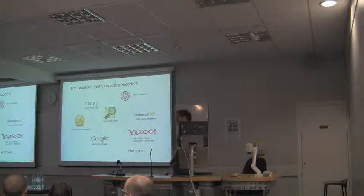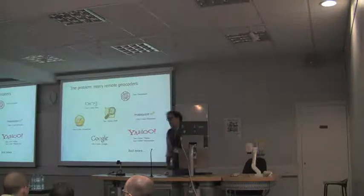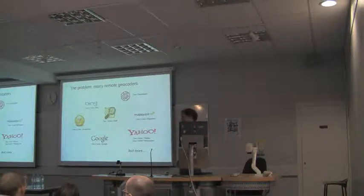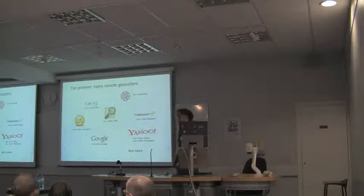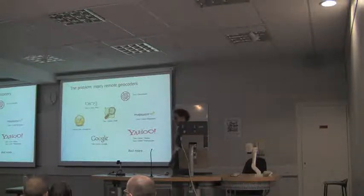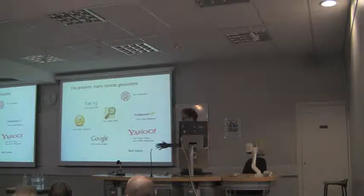The problem with remote geocoding is that there are a lot of different people who offer a remote geocoding service. This ranges from the big names of the internet — Google, Bing or Microsoft, Yahoo, MapQuest which is owned by AOL — all the way through to startups like CloudMade, SimpleGeo which is a new one in the US getting a lot of buzz lately, and of course there are even open source services like OpenStreetMap. These are just some; there are a lot of others.